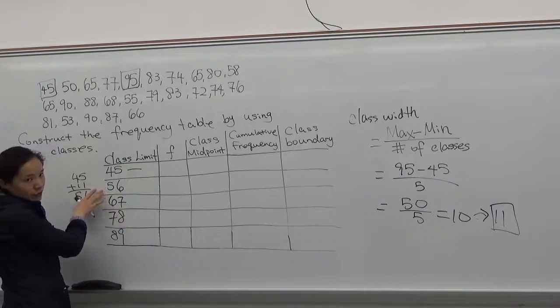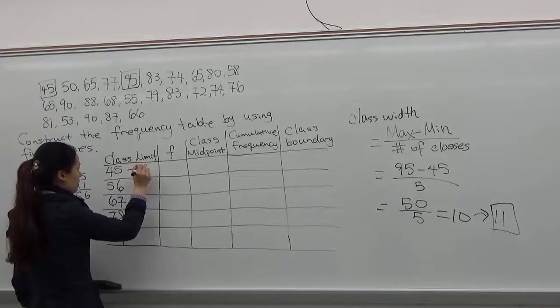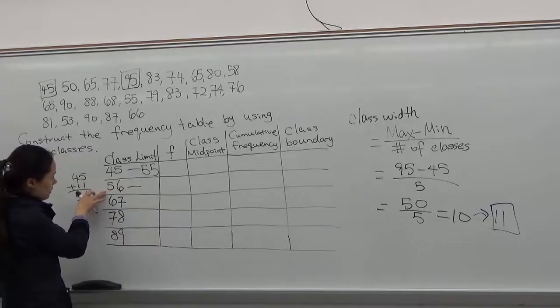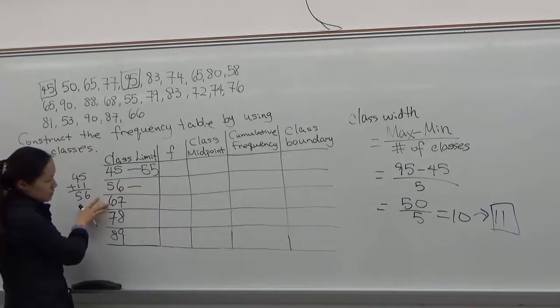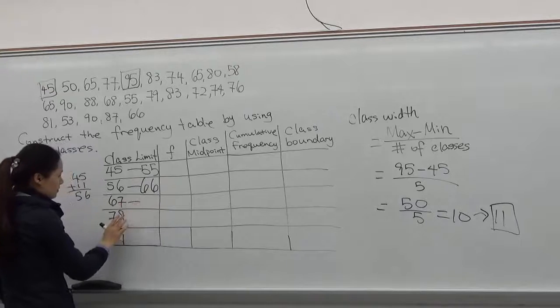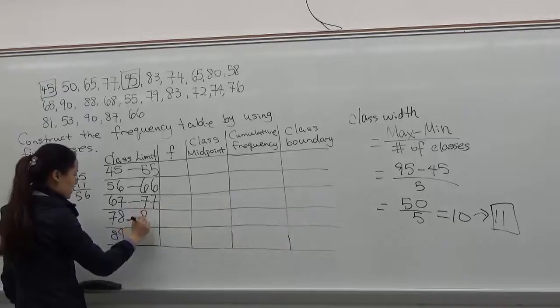If the second lower class limit is 56, so the first upper class limit has to be 55. You always subtract 1 from the next one. So if here is 67, that has to be 66. And 78 minus 1 is 77. 89 take away 1 is 88.